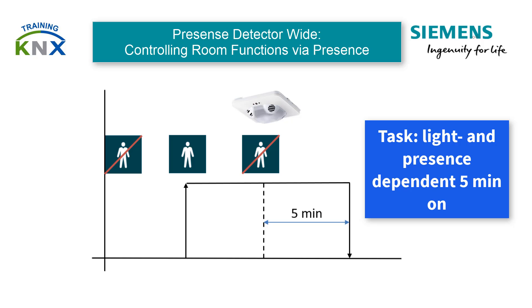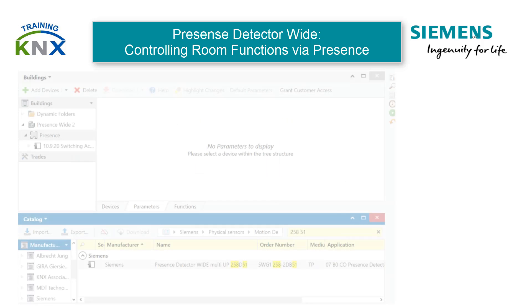The task for the fully automatic system is to switch on the room lighting without delay and brightness dependent when individuals are detected in the room. It should remain switched on as long as there are people in the room, and switch off again automatically with an overshoot time of 5 minutes after the last person has been detected, for example. For the configuration, we proceed to ETS now.